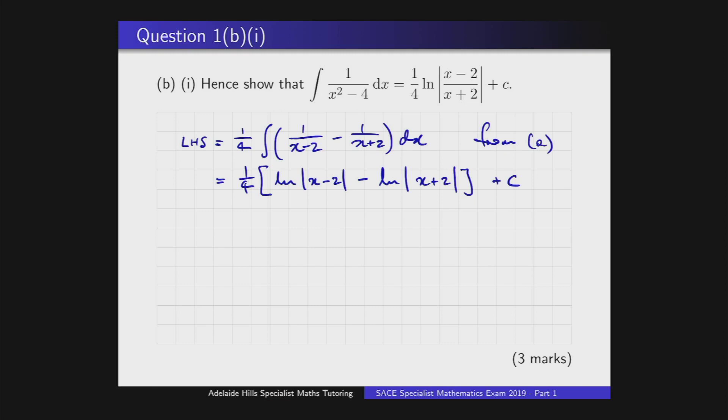And now the last thing we need to do, just to get to the right hand side of what's given in the question, is use a property of the log function, which is that if you're subtracting two log functions, then it's the same as taking the log of the quotient of the two arguments. And so we can write this as a quarter natural log of the absolute value of x minus 2 over x plus 2, and we still have that constant of integration. And that's the right hand side.